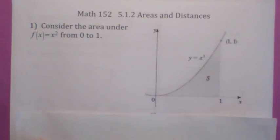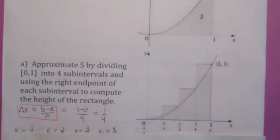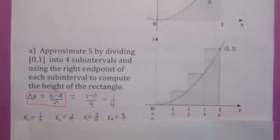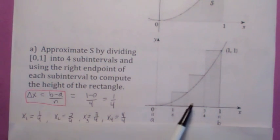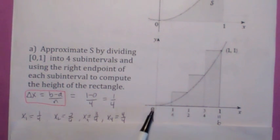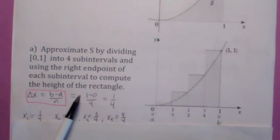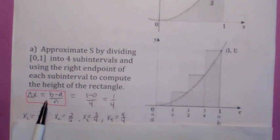This is how we're going to do it. We're going to approximate it by looking at the sum of the areas of these rectangles. Now let's suppose we want to approximate that area S with four rectangles by dividing up the interval from 0 to 1 into four subintervals. Each subinterval is going to have width 1 fourth.